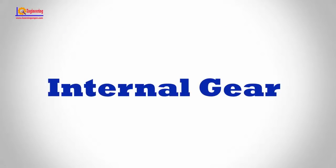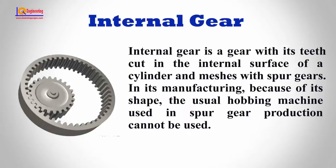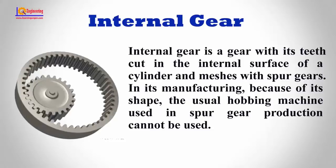Internal Gear. An internal gear is a gear with its teeth cut in the internal surface of a cylinder and meshed with spur gears. In its manufacturing, because of its shape, the usual hobbing machine used in spur gear production cannot be used.